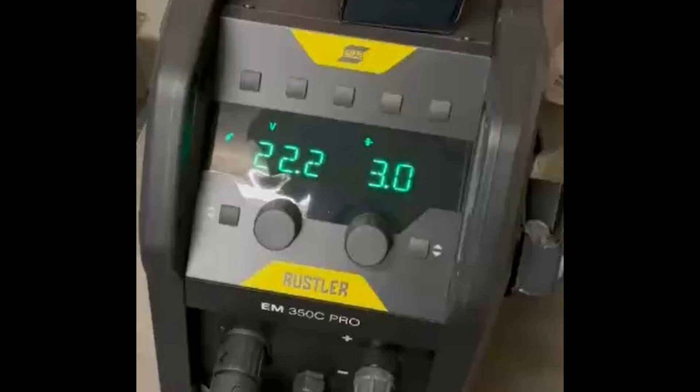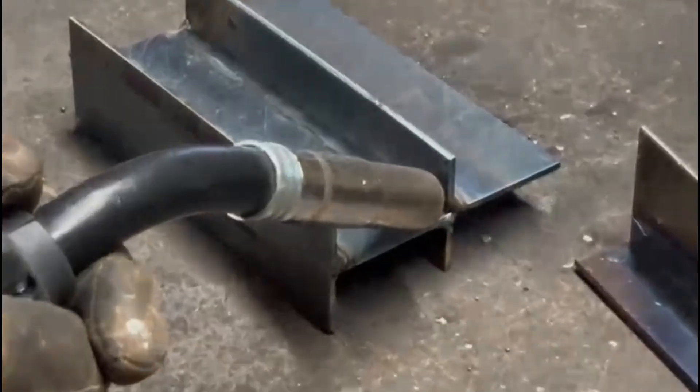So we're starting off with 22.2 volts and 3 wire speed. On all of these welds we're going to do a T-fillet on a 3mm plate using Argon CO2 mixed gas and 1mm wire.